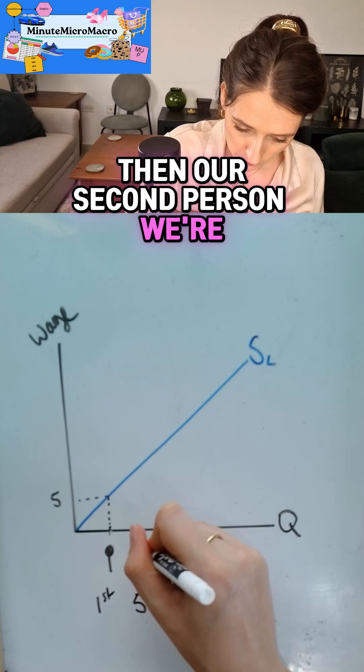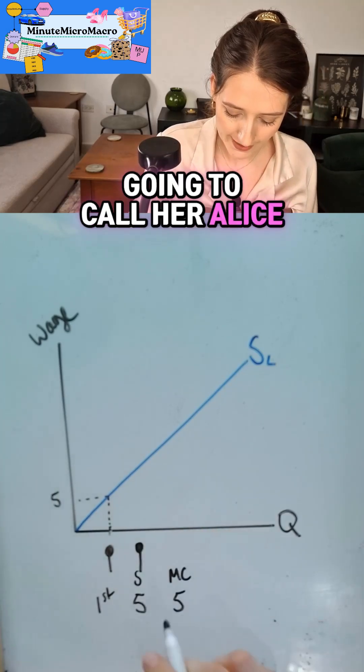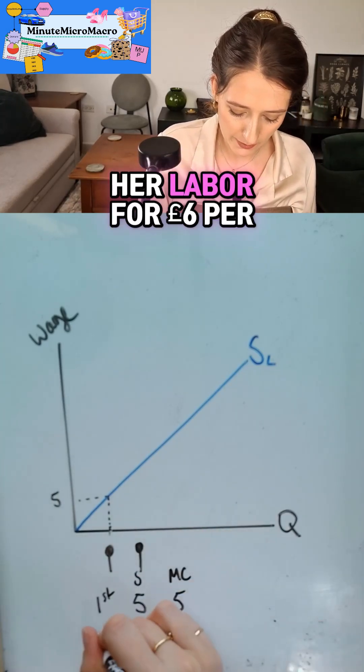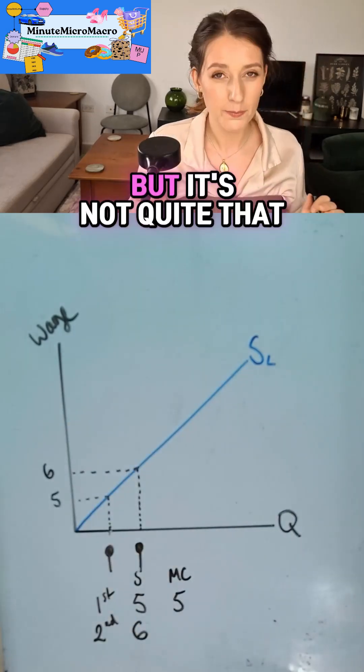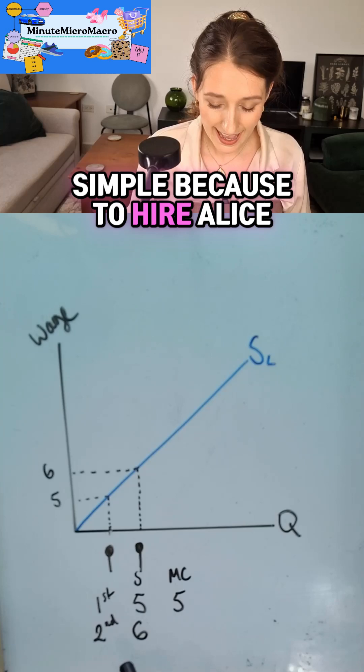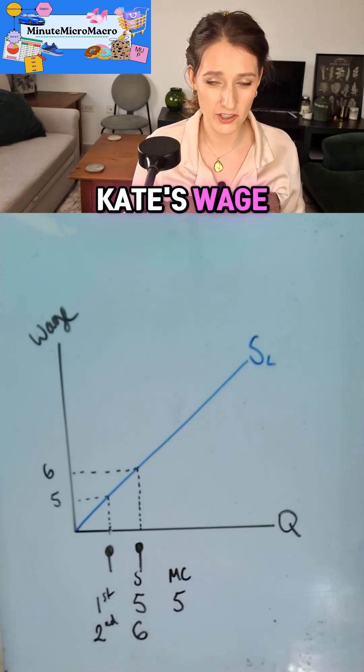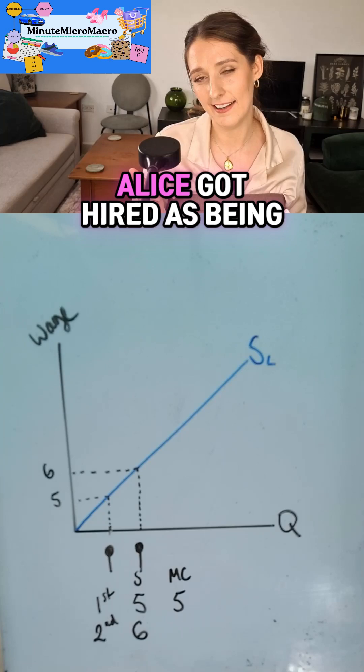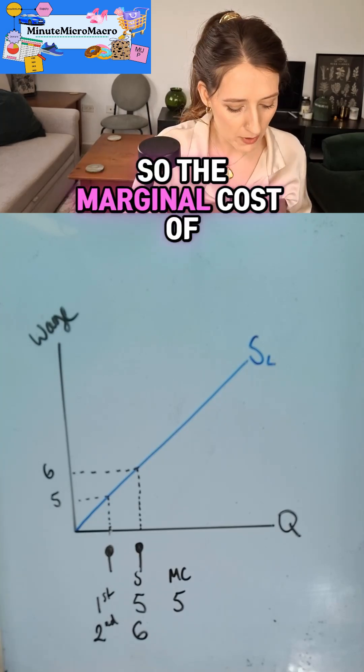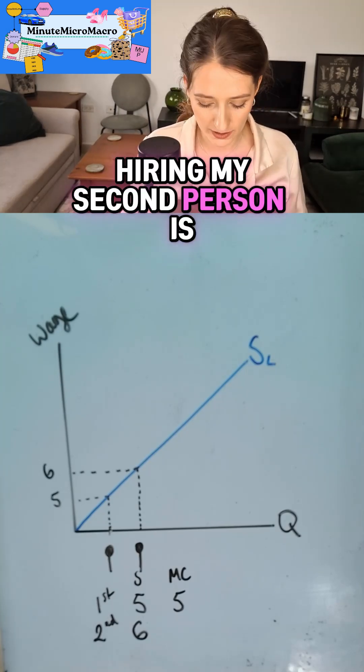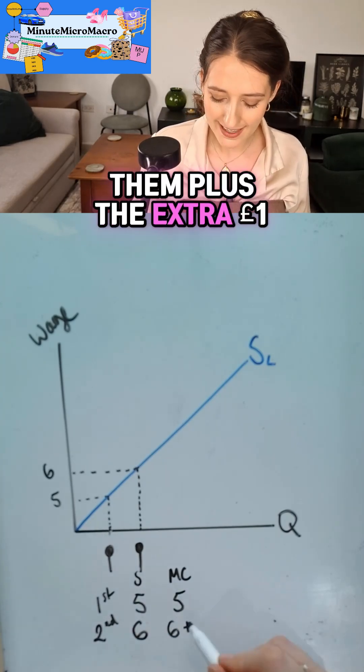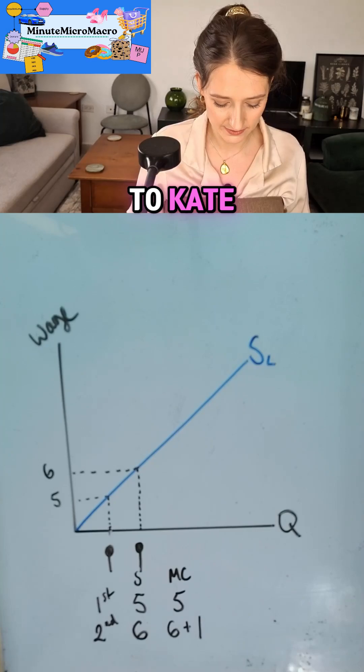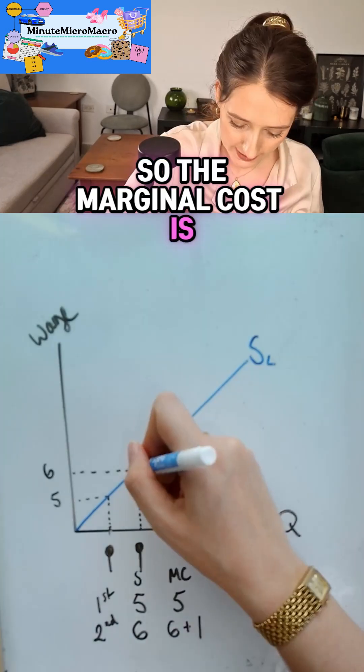Then our second person, we're going to call her Alice. Alice is willing to supply her labour for six pounds per hour, up and across six pounds. But it's not quite that simple because to hire Alice I'm going to have to adjust Kate's wage. Kate's not going to be happy if she finds out that Alice got hired and has been paid more than her. So the marginal cost of hiring my second person is going to be the wage I'm going to have to pay them plus the extra one pound I'm going to have to pay to Kate. So the marginal cost is going to be seven.